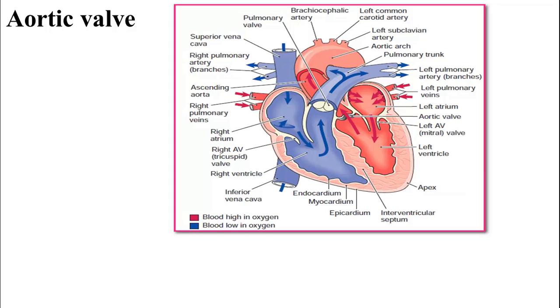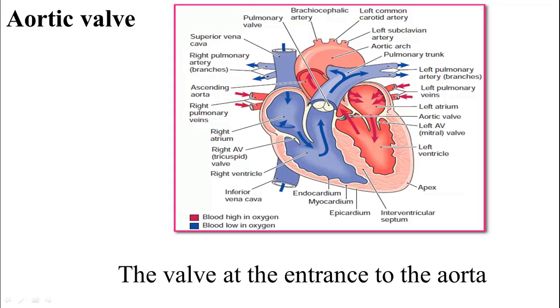A valve is a one-way door — it allows blood to flow in the forward direction. The aortic valve is situated between the left ventricle and the aorta, also known as the semilunar valve. When the aortic valve closes, it prevents the backflow of blood from the aorta into the left ventricle. When it opens, blood is expelled from the left ventricle into the aorta.